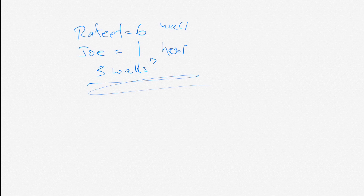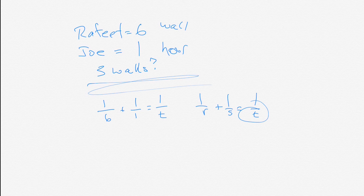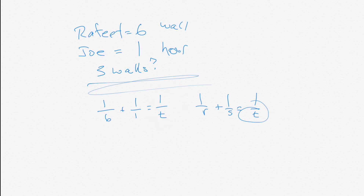Okay, hopefully you tried it. Using the formula, the first term is one over R, so one over six for Rafif. Plus one over one for Joe, equals one over T. This formula gives us how long it takes them to do one wall, and then we can multiply that answer by three to find how long it takes them to do three walls. Let's do it.